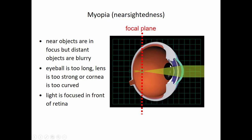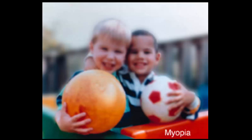Myopia could occur because the cornea is too curved and bends the light too much, the lens is too curved and too strong, or the eyeball shape is too long so even though the lens and cornea are working properly, the photoreceptors are farther back and the focal point lands in front of the retina. Objects closer to you are more in focus, and the further away they get, the more blurry they become.